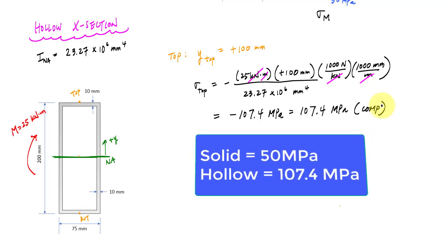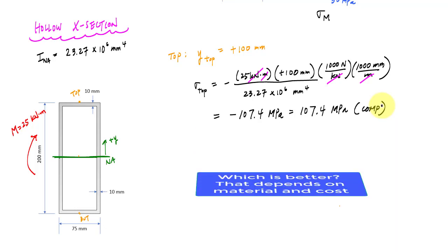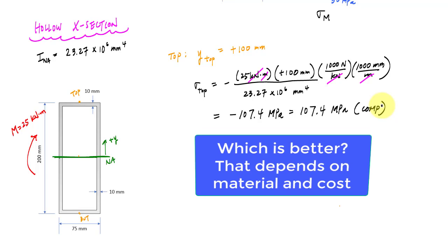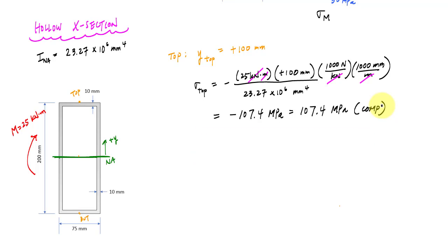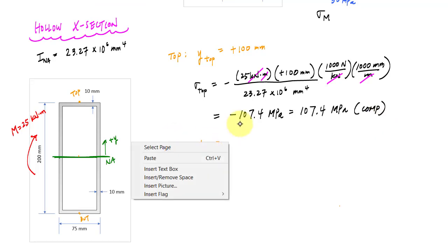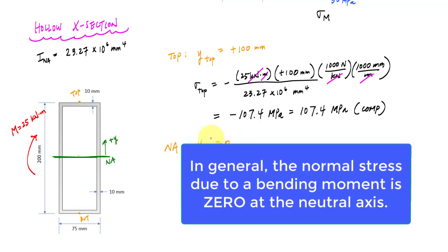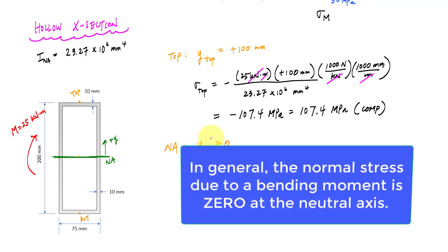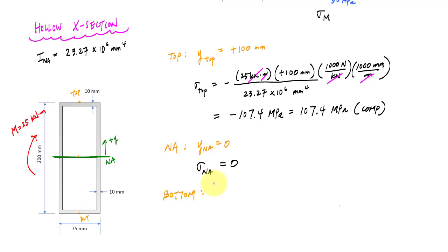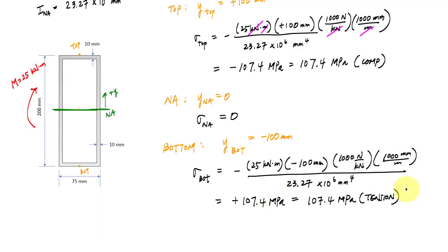At the neutral axis, Y is still zero, so the normal stress due to bending is zero. At the bottom, we should get 107.4 MPa again but in tension, because the distance from the neutral axis to the bottom is defined as negative 100 millimeters.